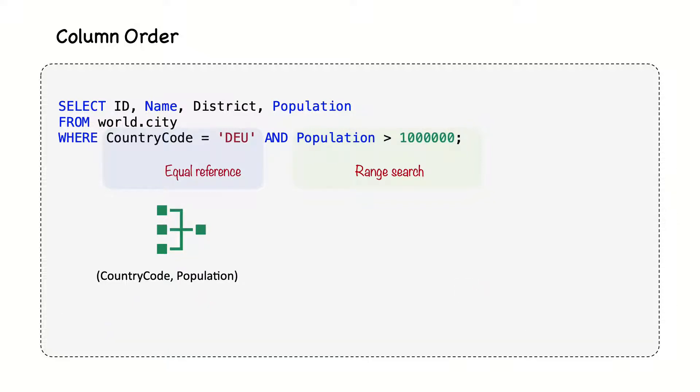On the other hand, if we need to add several columns that all are used for the equality conditions, then there are two things we must consider. Which columns are most often used and how well does the column filter the data? When there are multiple columns in an index, MySQL will use only the left prefix of the index.